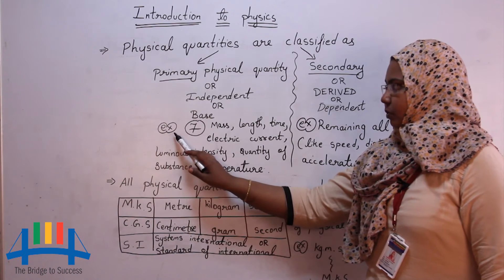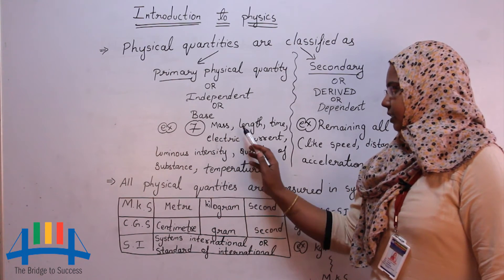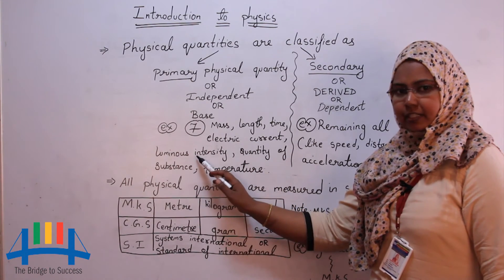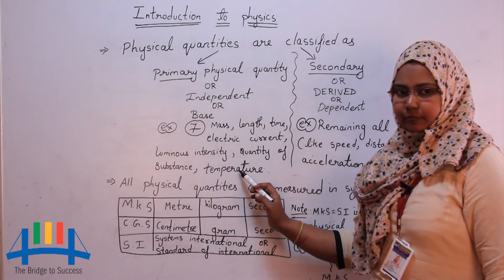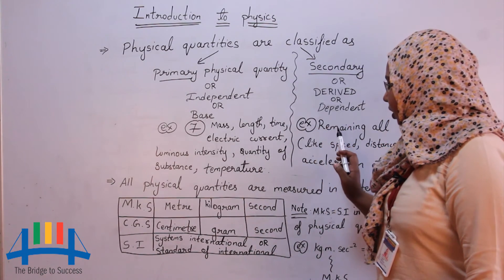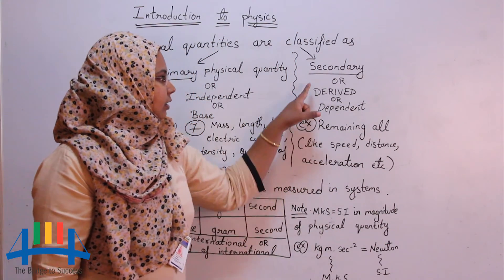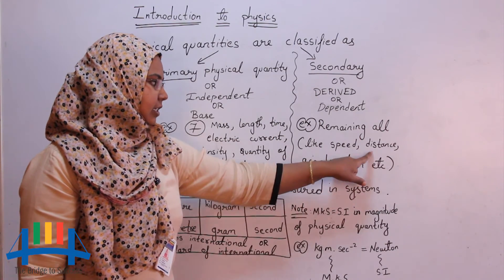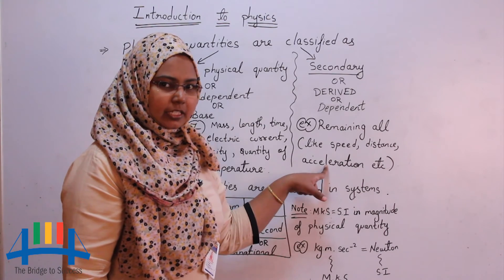There are 7 types of primary physical quantities that is mass, length, time, electric current, luminous intensity, quantity of substance, temperature. And the remaining all physical quantities comes under secondary physical quantities like speed, distance, acceleration, velocity, work, energy, etc.